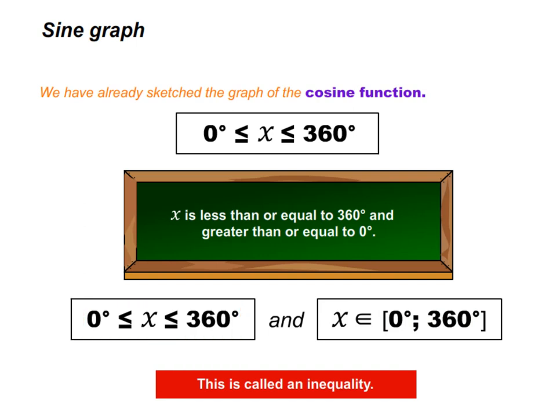X is an element of 0 degrees and 360 degrees means x is between 0 degrees and 360 degrees. This 0 degrees is on the left and 360 degrees is on the right.